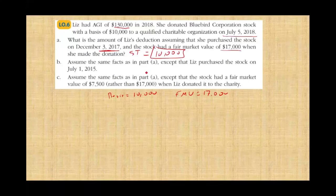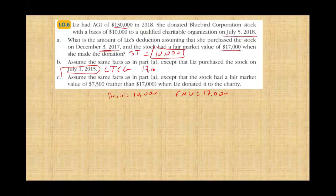Assume instead that Liz purchased the stock on July 1st, 2015 — that makes it a long-term capital gain. For long-term capital gain property, you generally take the fair market value if it's higher, which is $17,000. In this situation, the deduction is the fair market value of $17,000.